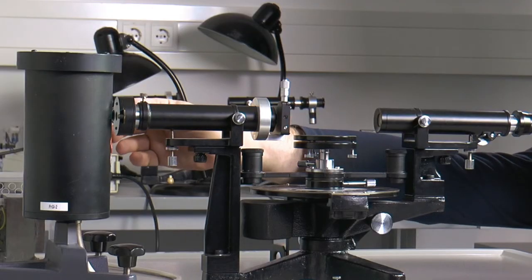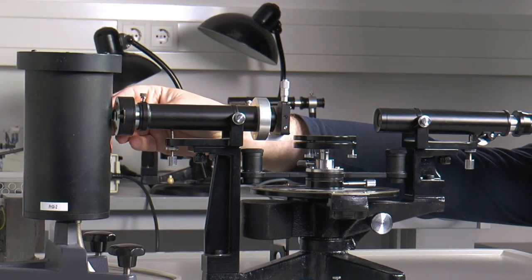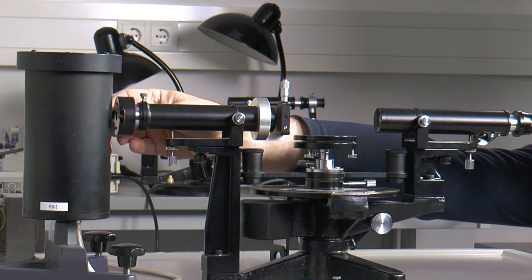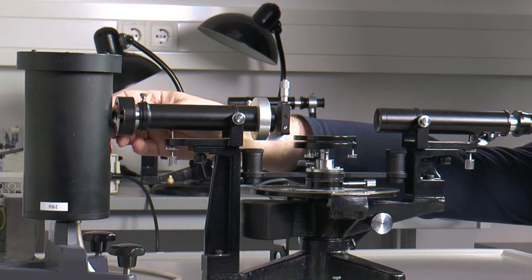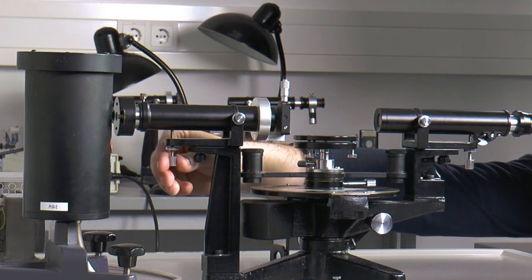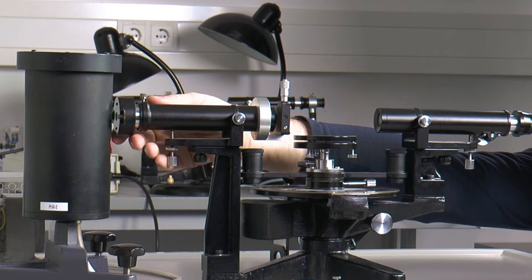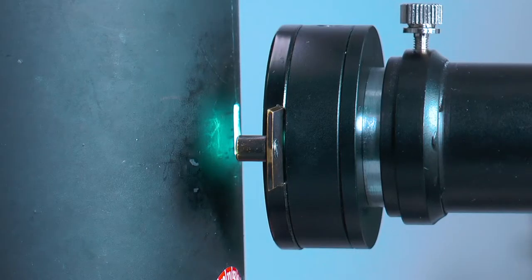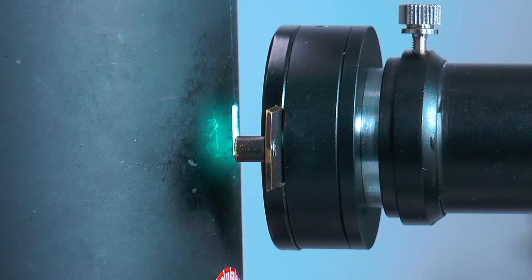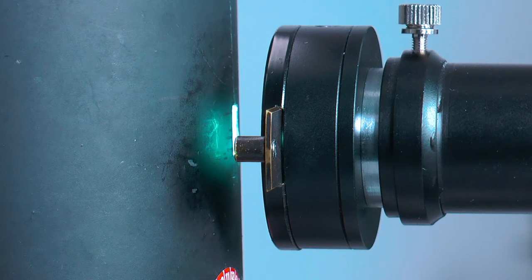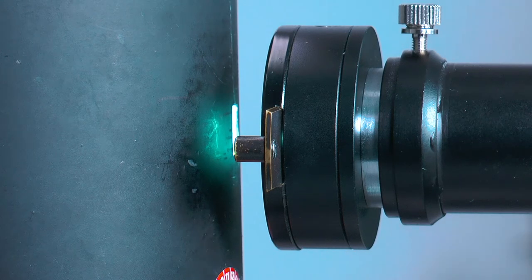First, without the prism in place, tube and telescope are aligned so that a slit between the lamp and the prism table is in focus. With the lamp switched on, note down the angle of the telescope as a reference value for the initial position.